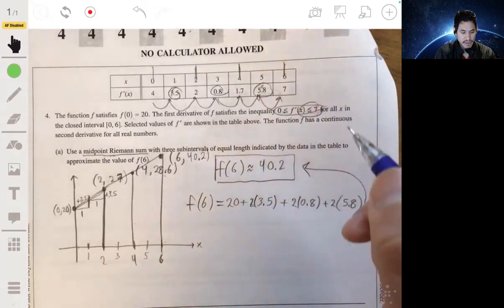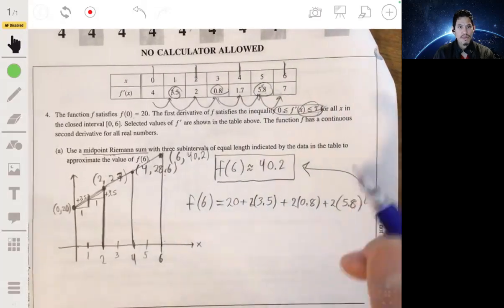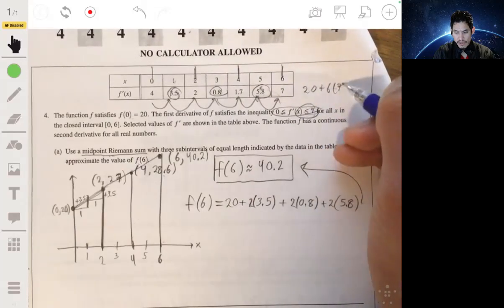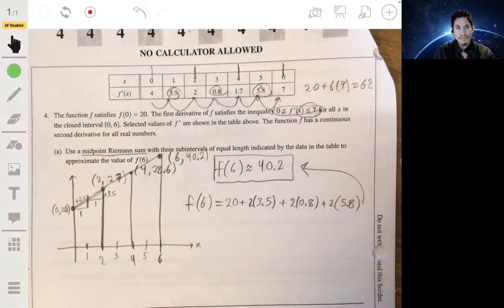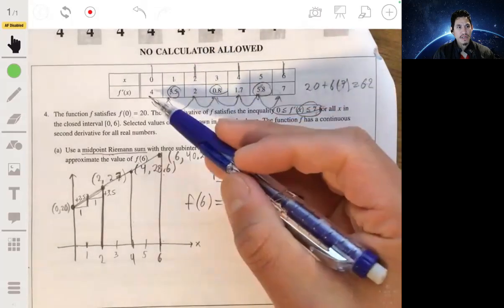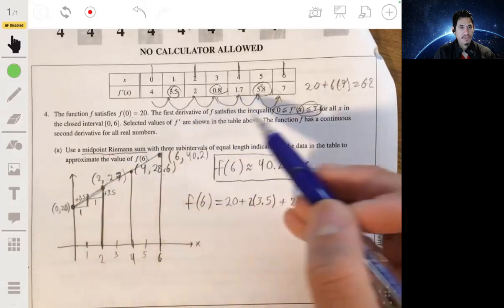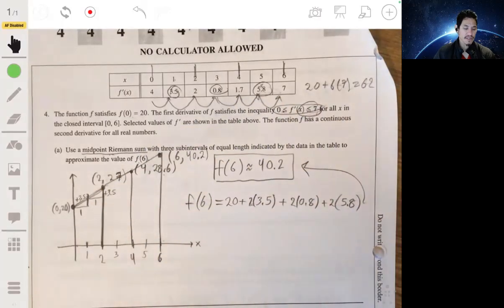So the highest value that could possibly happen would be 20 plus 6 times 7 or 62. Because you start at 20, you start at 20. And again, if you're increasing by 7 six times, which is the most we can do, at most we would get 62.